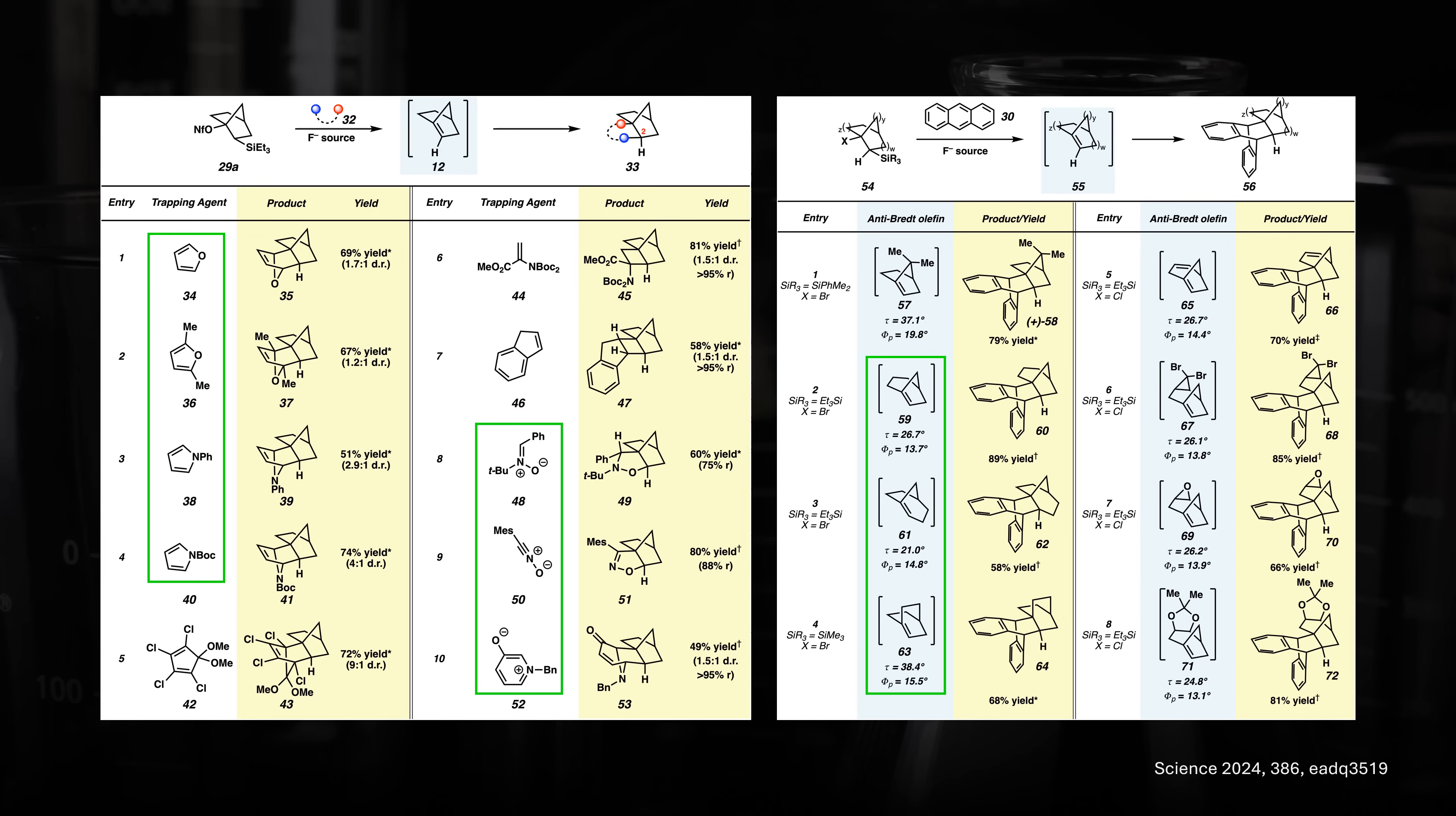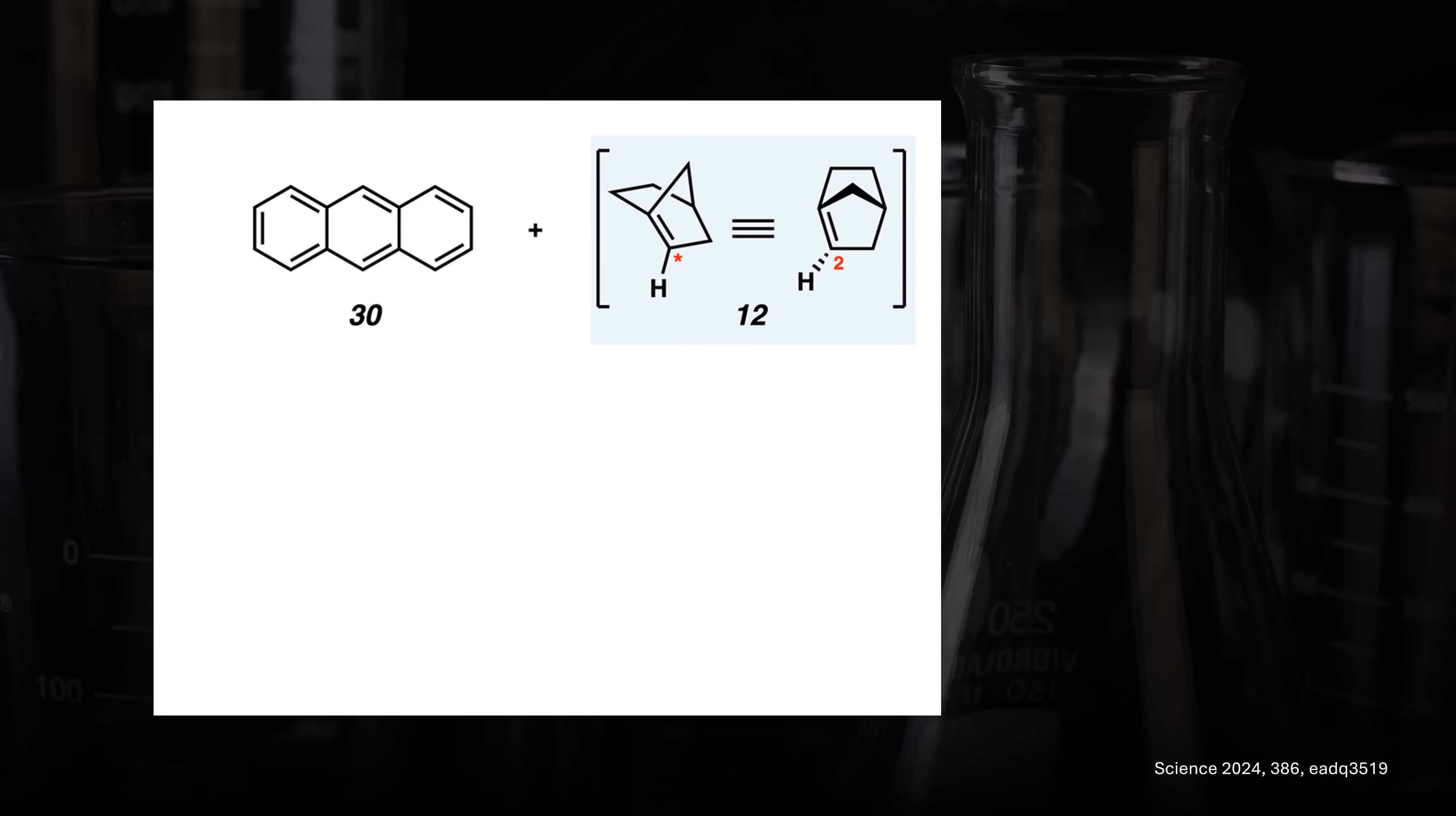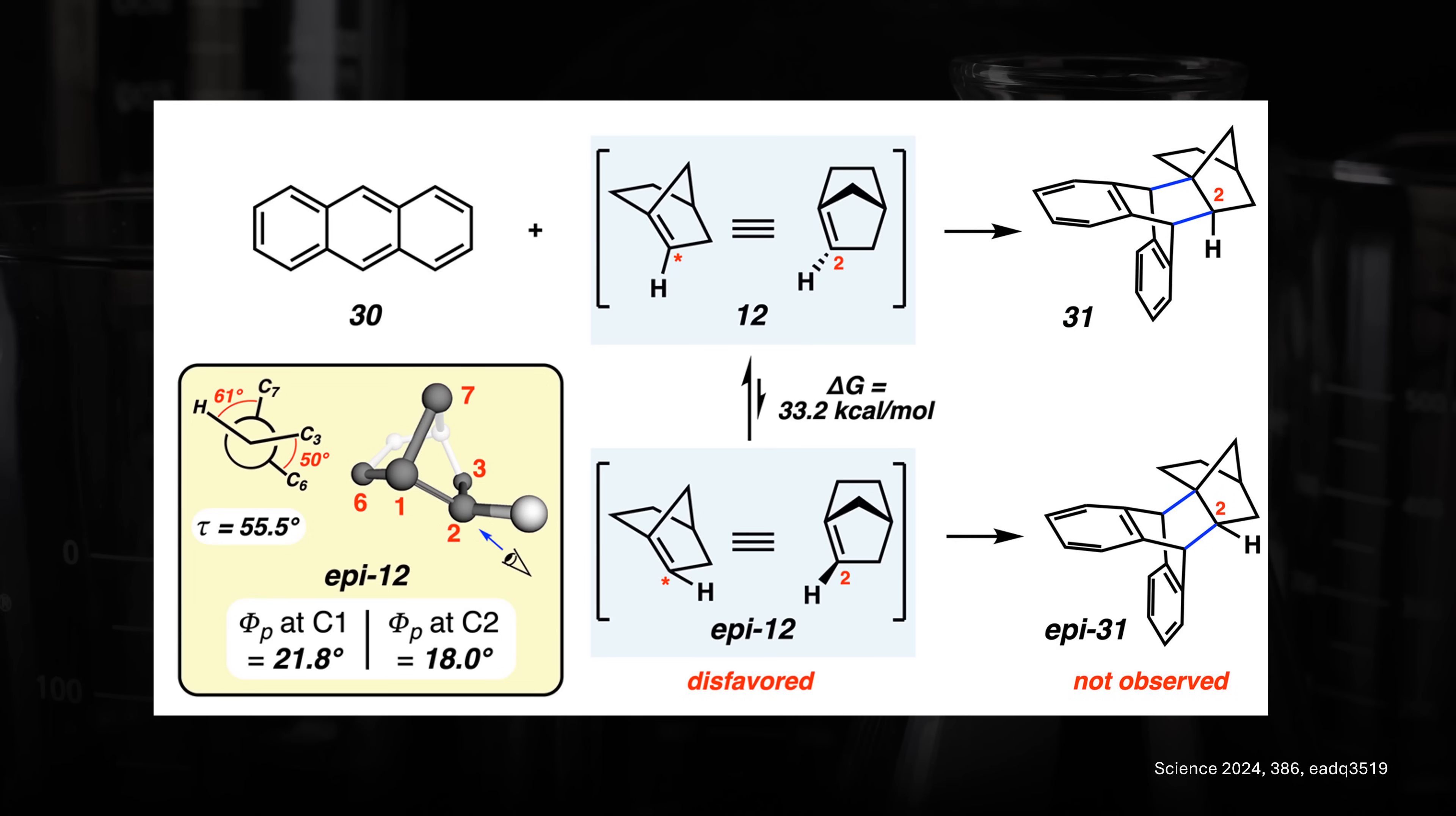If you're paying attention, you will have noticed that the figure reports diastereomeric ratios of products. But what stereoselectivity does this even refer to? Our anti-Bredt olefin is actually one specific diastereomer with the hydrogen retaining a pseudo-axial position after the initial elimination. Remember that instead of a coplanar geometry, we said the system is twisted to a significant degree? Well, the epi-diastereomer with a pseudo-equatorial hydrogen would be even more distorted with larger twisting angles and more pyramidalization. This elevates its energy and explains why we don't see any cycloaddition products with an equatorial hydrogen at the carbon.